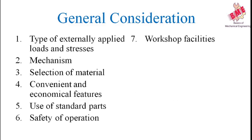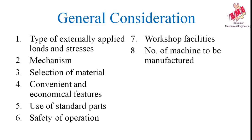Next is Workshop Facilities: a design engineer should be familiar with the limitations of the employer's workshop. More parts are to be manufactured in the organization with available machinery, and the designer should change the manufacturing process to manufacture that part if possible. Next is Number of Machines to be Manufactured: the designer should consider how many parts or machines are to be manufactured in the company, so that the appropriate machinery required to manufacture that number of machines can be purchased from other industries to give maximum profit to the manufacturer.